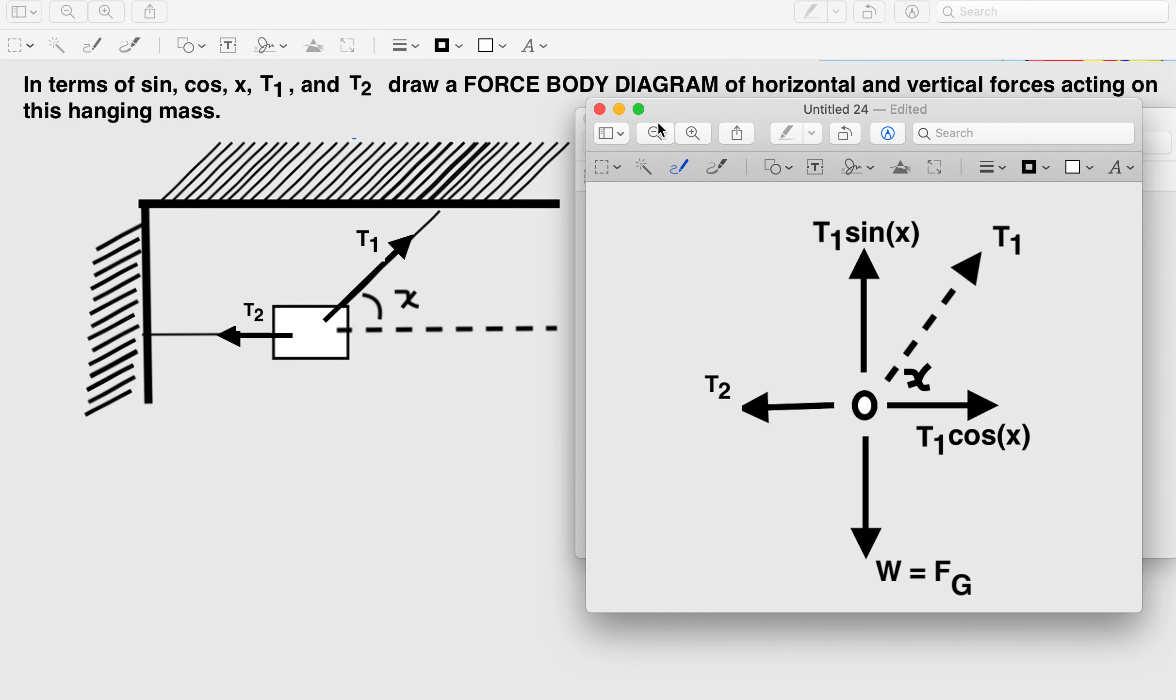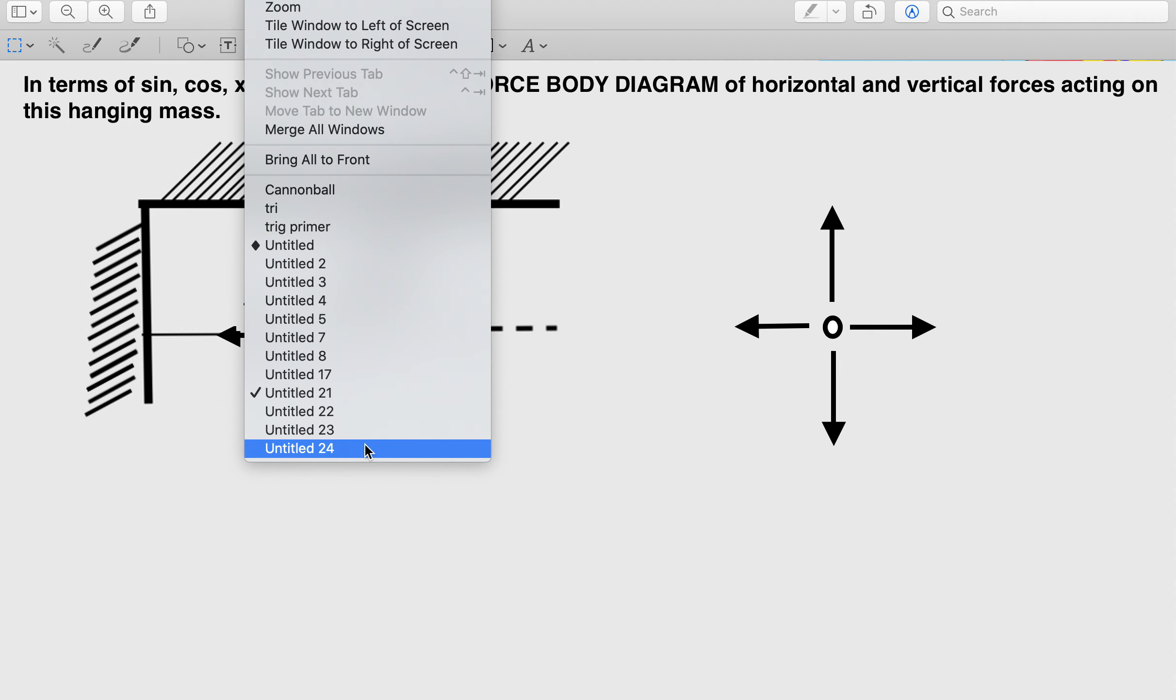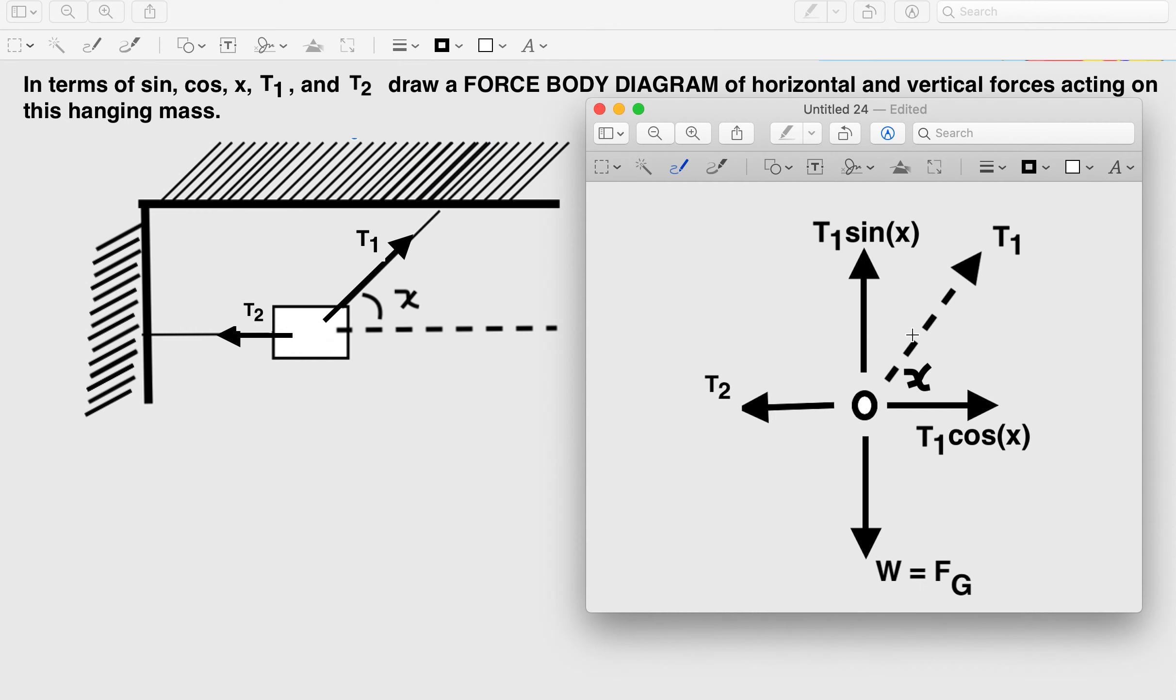So now I can get rid of this T1 and x right here for my final answer of all of the angles, all of the horizontal and vertical components here. So our final answer would look like this.